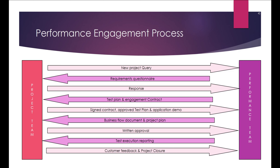As you can see on the screen, it shows the graphical representation of the performance engagement process. The project team's tasks include: responding to the requirement questionnaire, signing the contract, approving the test plan, providing an application demo, providing written approval on the business flow document, and providing feedback on the closure report. The performance testing team's tasks include: sending the requirement questionnaire, preparing the test plan, creating the business flow document, creating the project plan, executing tests, and reporting results.